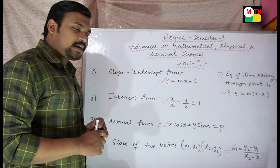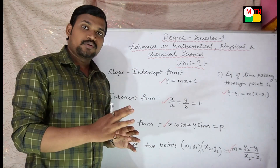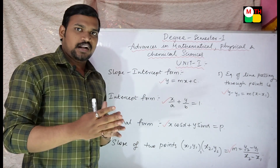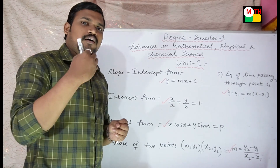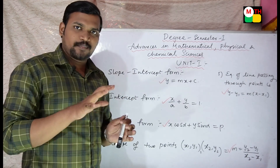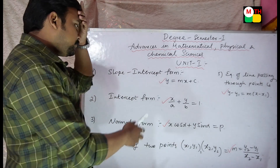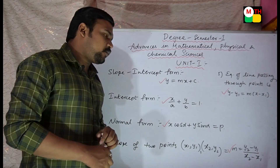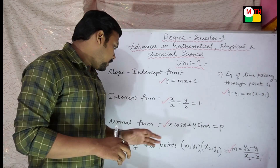Normal form: x cos alpha plus y sin alpha equal to p. That is the normal form equation.